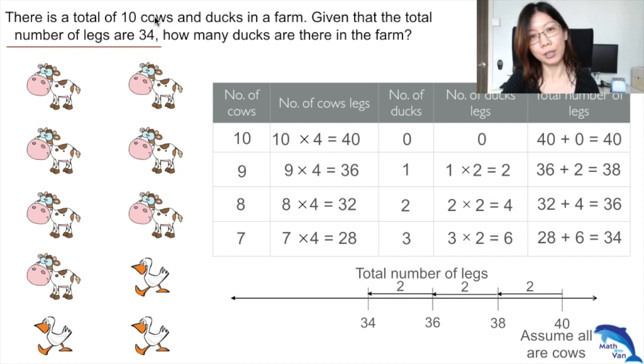How can we make our life easier? As you can see, every time you take out one cow and put in one duck, you have a consistent result of 2 - the total number of legs will drop by 2.